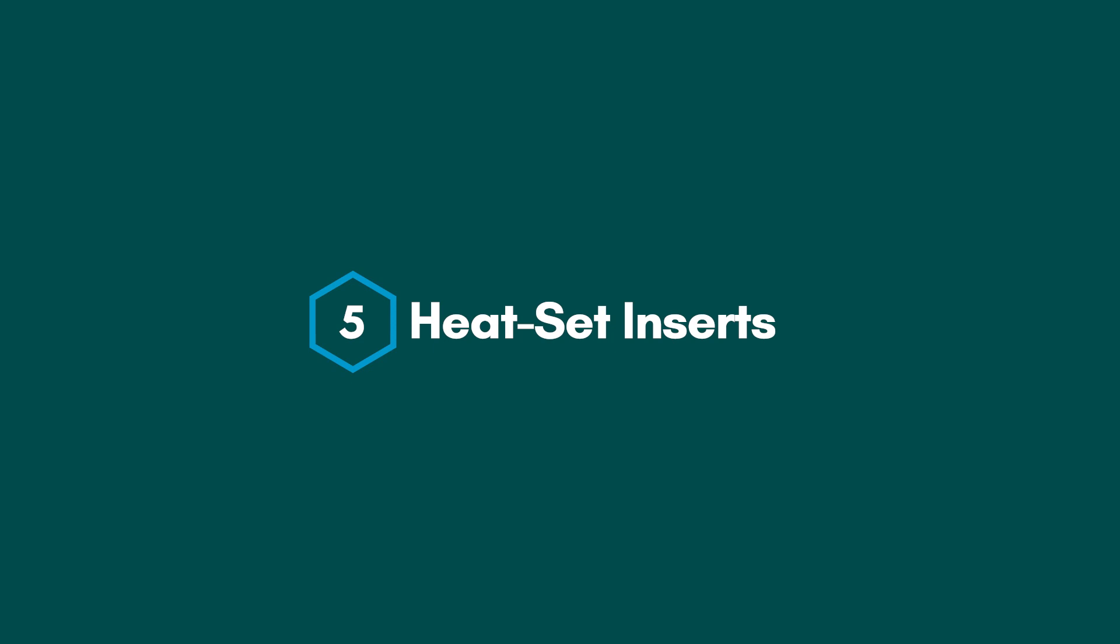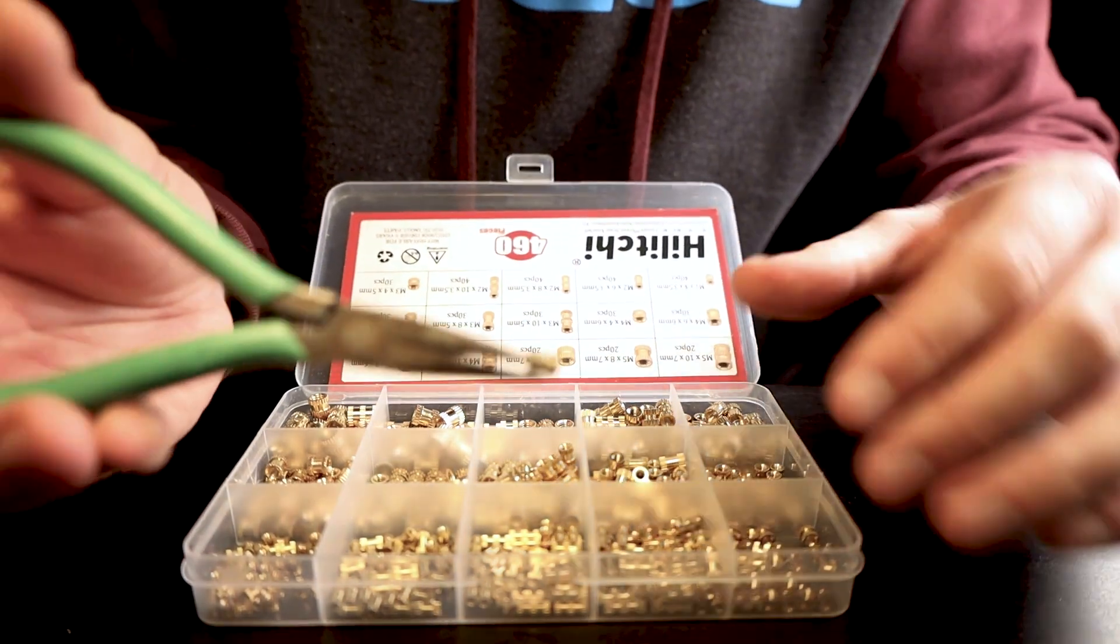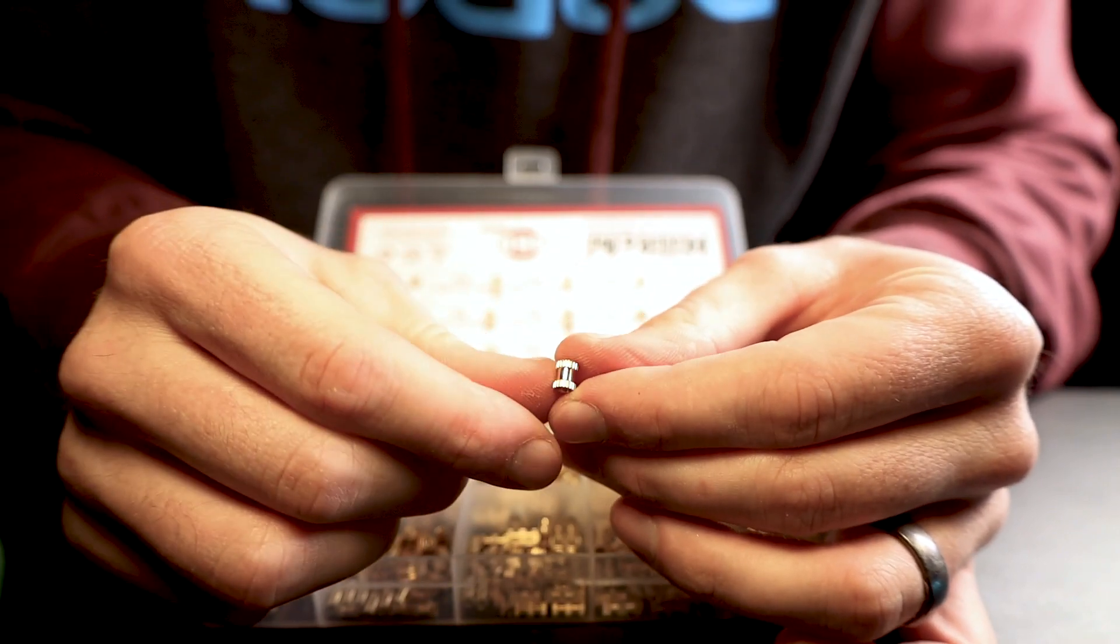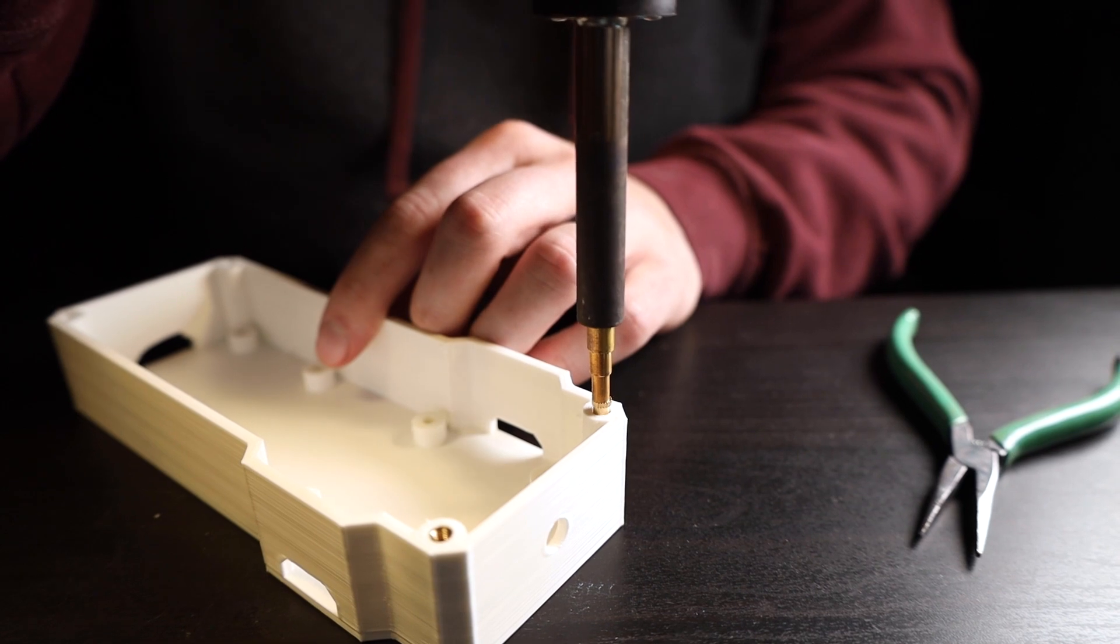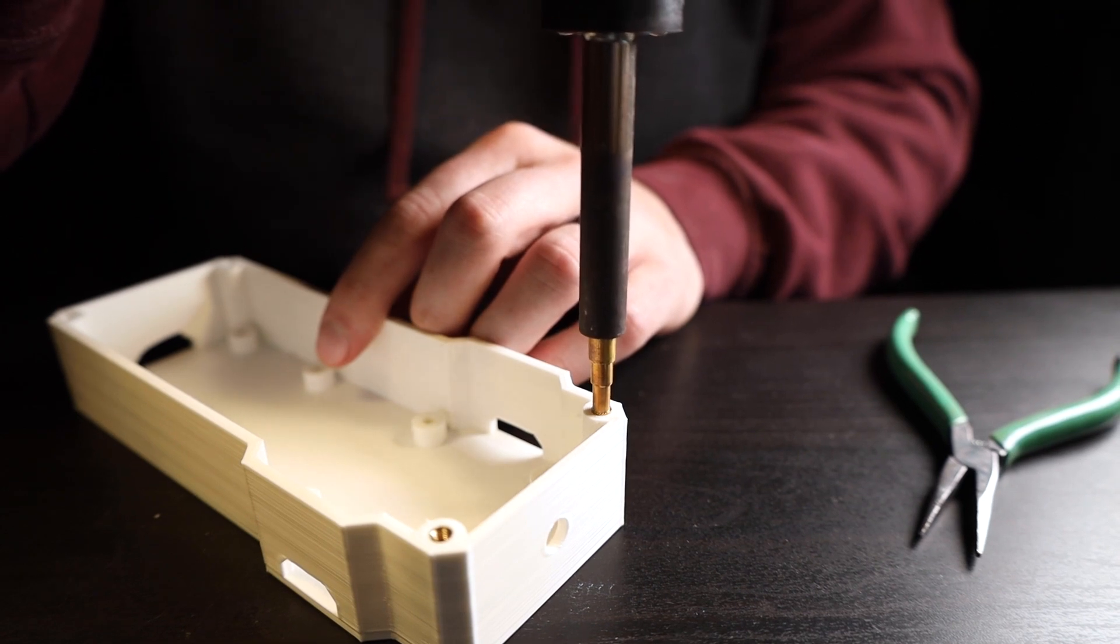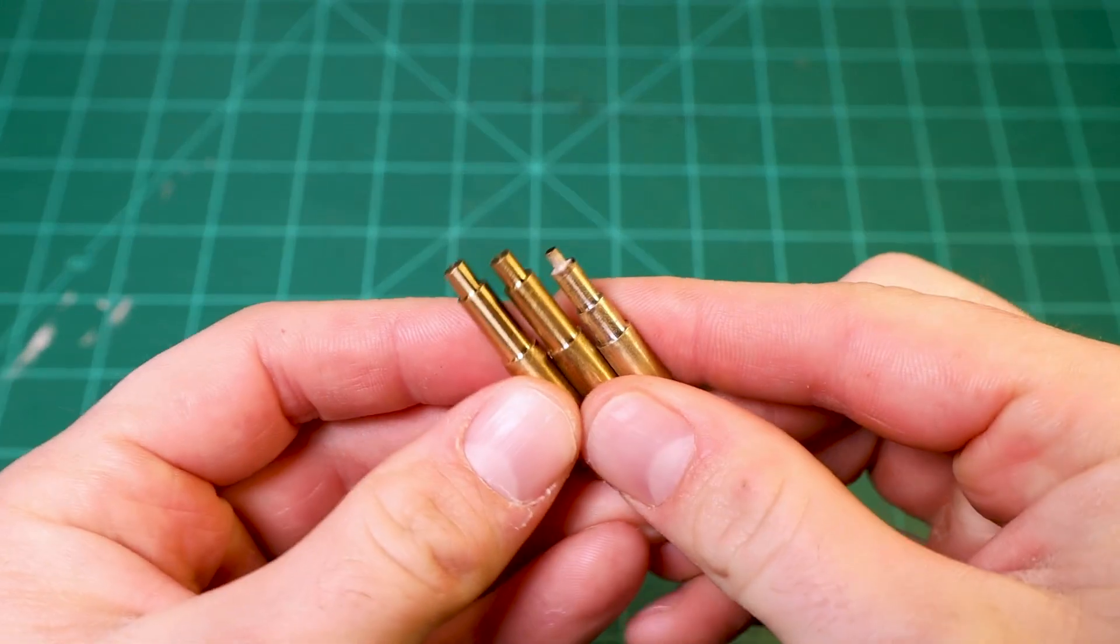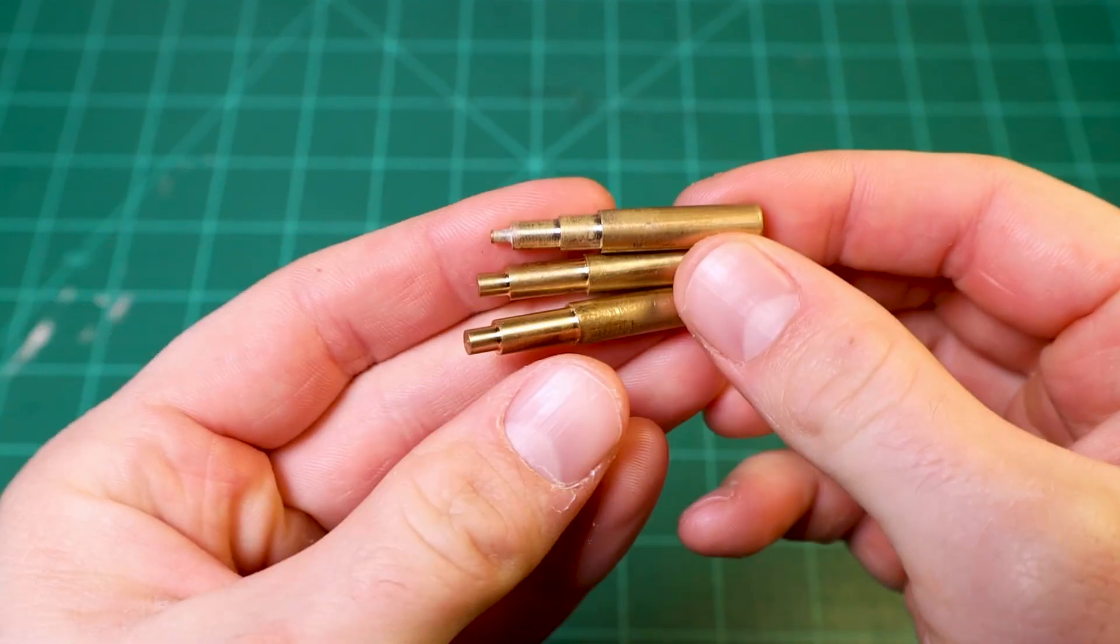The fifth and final method that I want to talk about today, which also happens to be my favorite method, is the use of heat set inserts. If you aren't familiar, heat set inserts are little brass components that are inserted into the plastic using heat, usually in the form of a soldering iron. Heat set inserts give you a clean, strong thread that's melted directly into your part, and it's as simple as adding the right sized hole to your part. Any soldering iron should work, but you can also buy special tips that help keep the insert flush with the surface of your part.